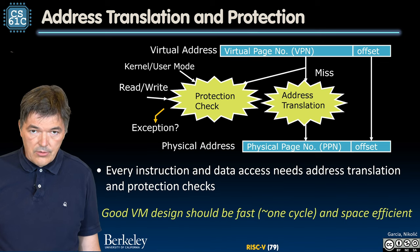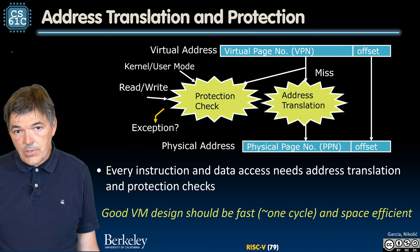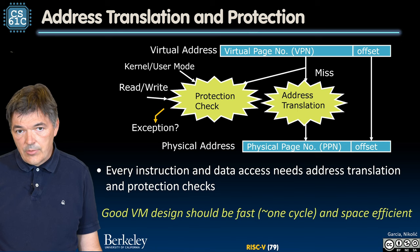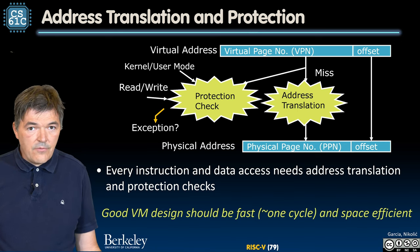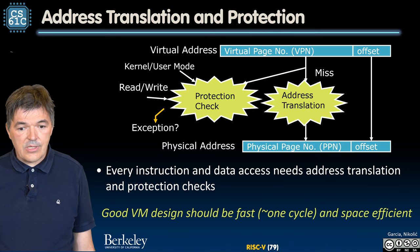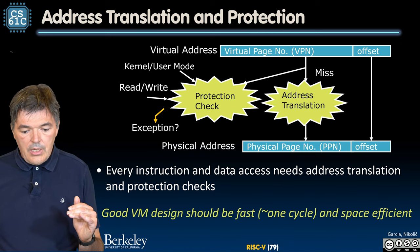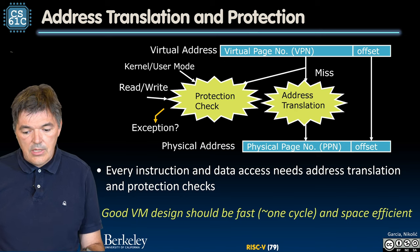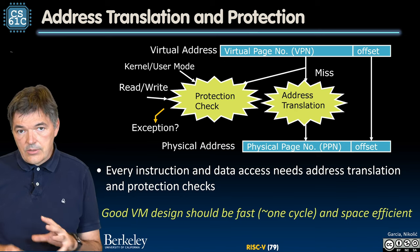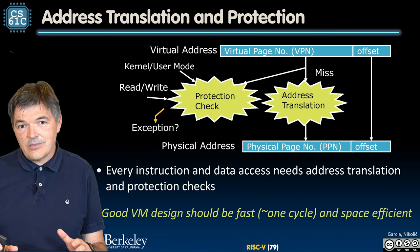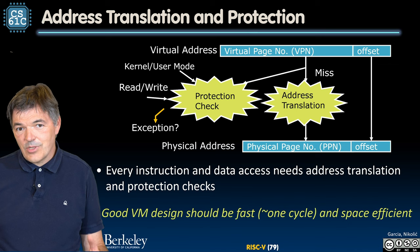But before that, or concurrently with that, we need to do a protection check — whether this reference has been issued by a user-level process or a supervisor, and whether we have access to those memory locations, and whether we are allowed to read, write, or execute. If the answer to any of those is no, then we throw an exception and let the operating system handle that. Every instruction and data access for both instruction and data memories needs address translation and protection checks.